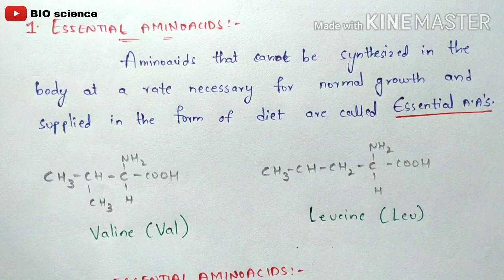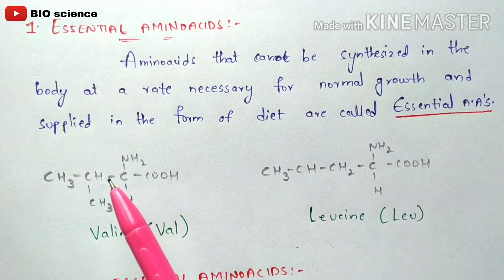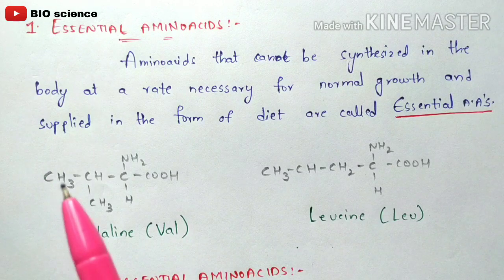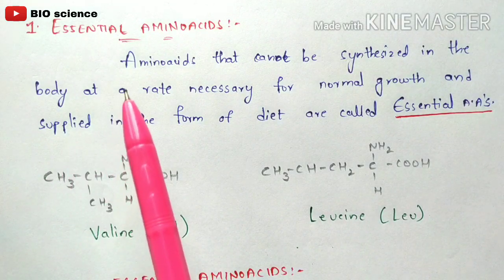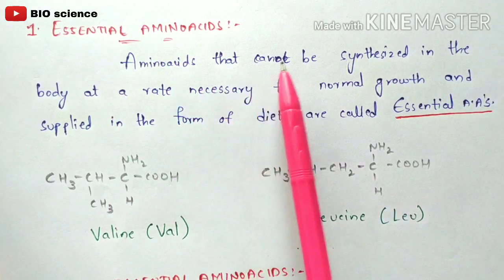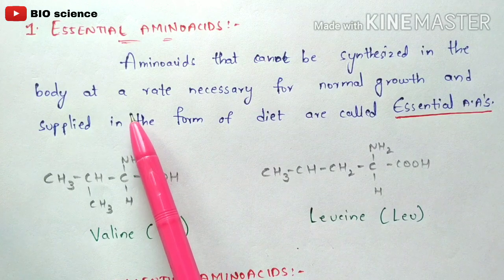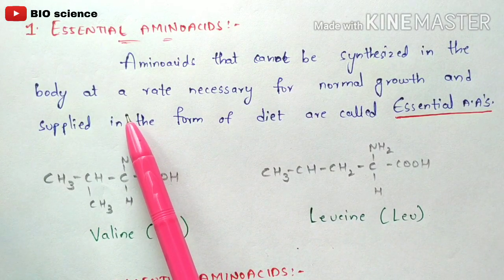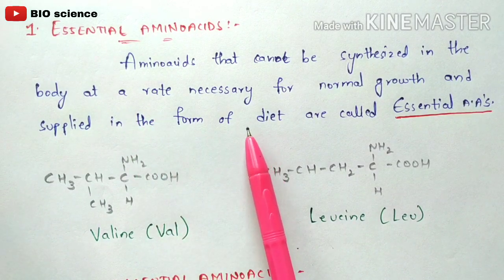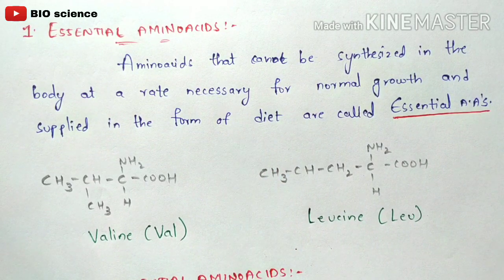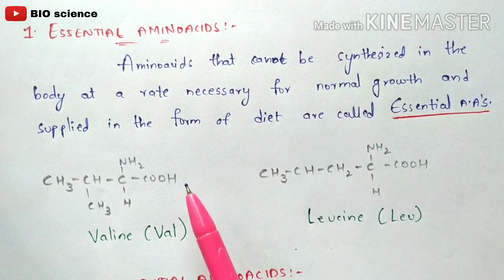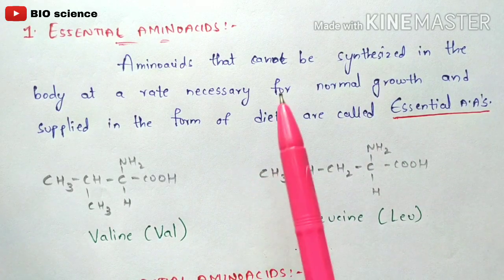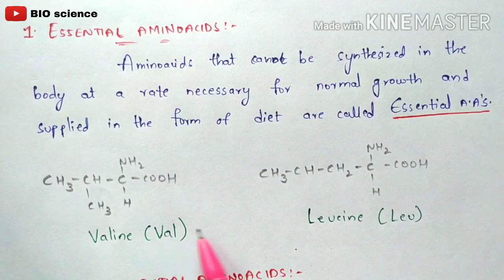What is the main function of amino acids? It mainly helps in the development and growth in humans and animals. Essential amino acids cannot be synthesized by our body, so we supply them externally through diet — through nutritious food. If you consume nutritious food, the appropriate amino acids necessary for growth are obtained. The best examples of essential amino acids are valine and leucine, and these are their structures.